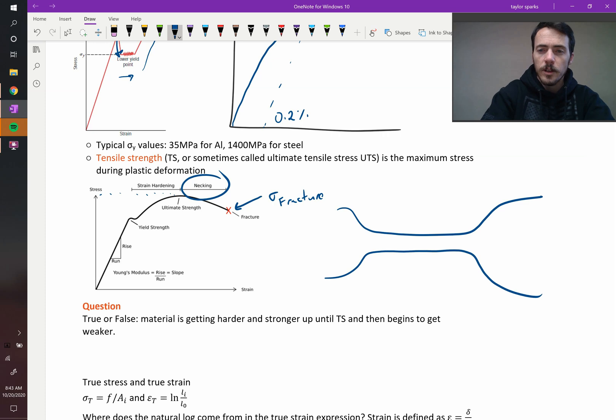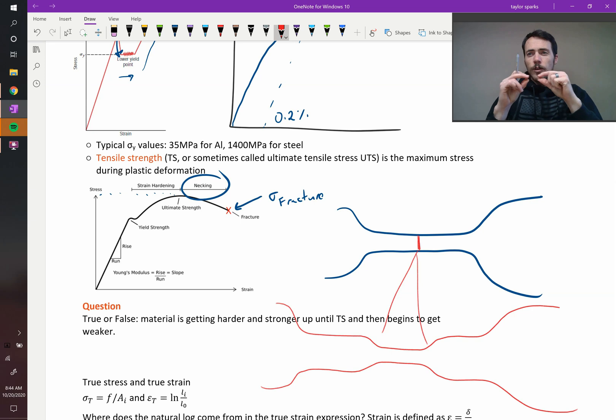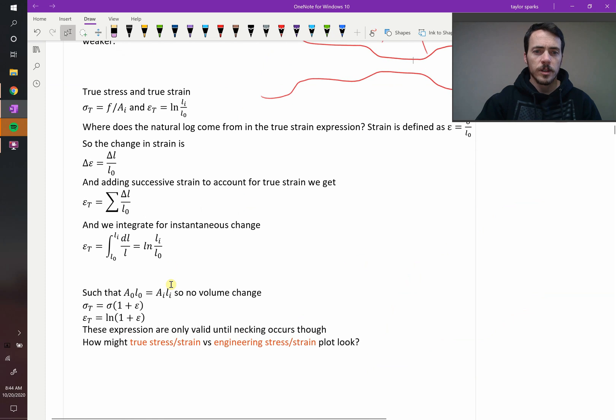That's before you bend it, but you can get localized deformation where maybe it looks like this. This region right there basically gets further drawn down, that's called necking. We'll show you some pictures of that in a minute.